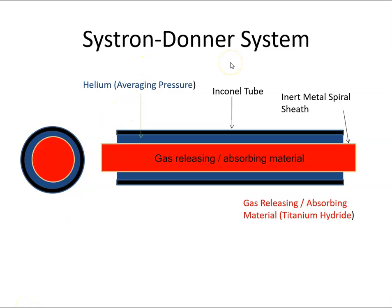The Sistrand-Donner fire detection system is an example of an electro-pneumatic system. With this system you have a tube and in it we have a gas, helium, and inside there also we have this material called titanium hydride. So what this material does is when it gets hot it releases hydrogen and as it cools it absorbs hydrogen.